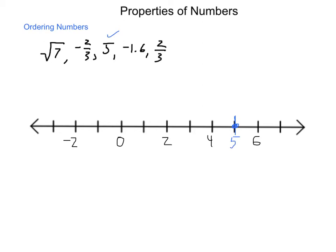Two-thirds will go about here. Negative two-thirds will go on the other side, about the same relative location. So that's negative two-thirds. Positive two-thirds. A negative one and six-tenths is going to be just beyond a negative one and a half. So a negative one and six-tenths.